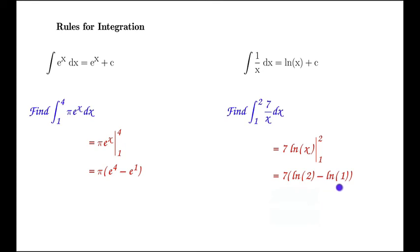To simplify, since ln(1) = 0, this term will drop out, leaving us with 7·ln(2).